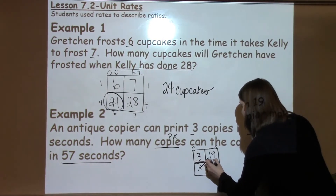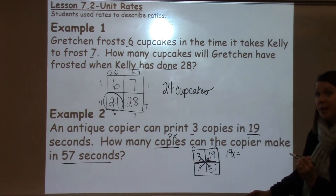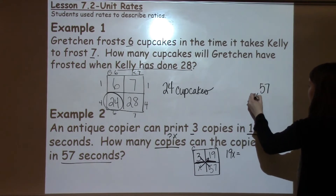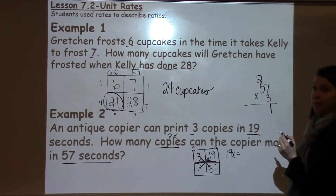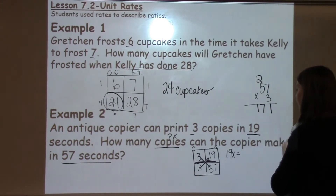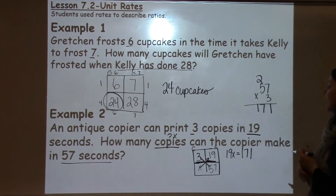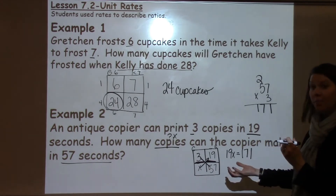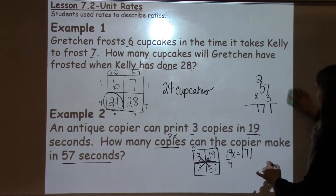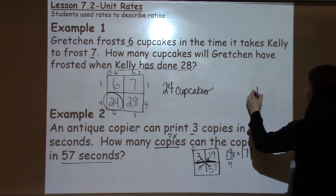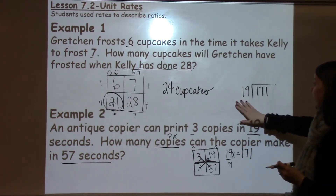Cross-multiplying gives me 19x equals 3 times 57. I'm going to do that multiplication over here: 57 times 3. 7 times 3 is 21 — put down my 2, carry my 7. 5 times 3 is 15, plus 2 more is 17. So I have 171. Now I've got 19x equals 171. To get x by itself, I need to do the opposite operation, which is division. So I'm going to divide by 19 — take 171 divided by 19. These are things students may not be super familiar with, so make sure they have room to show their work.